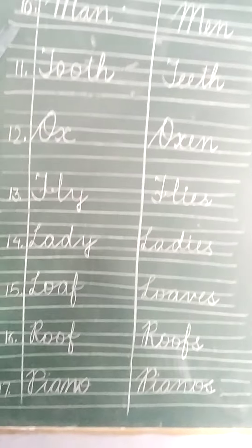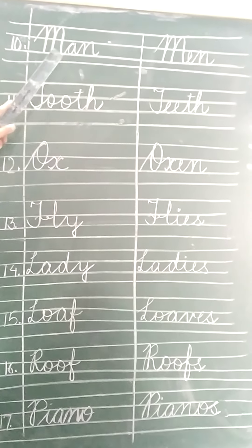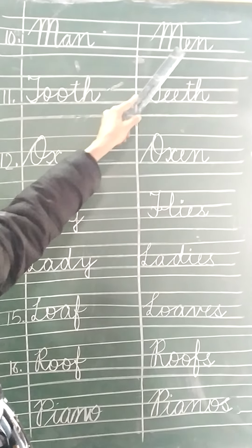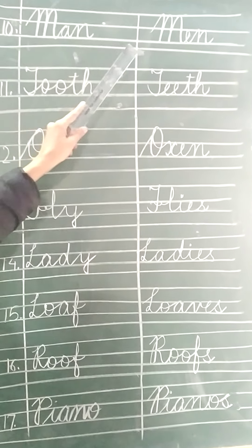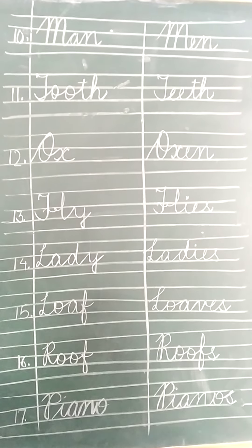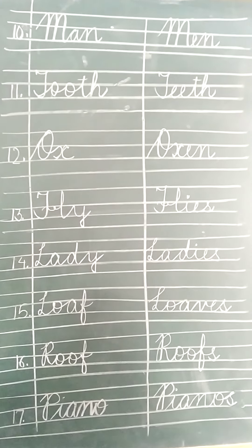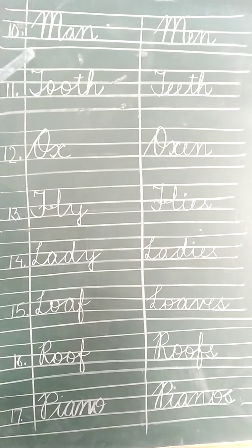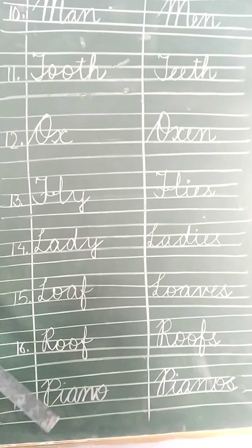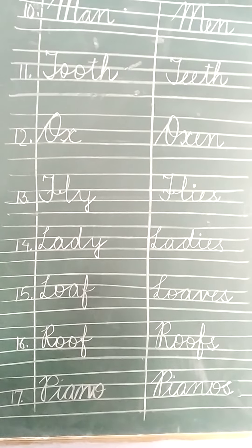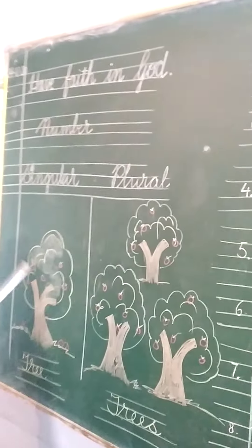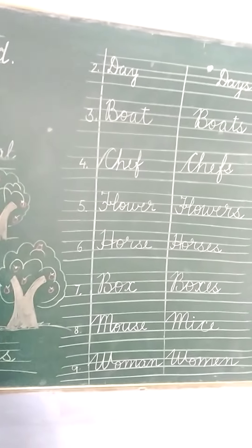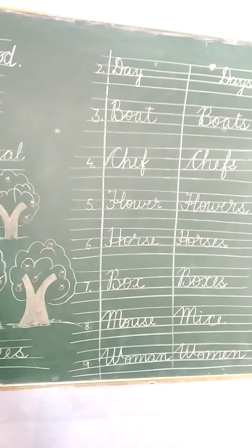The last word is man — M, A, N. Again, we replace A with E and it becomes plural: men — M, E, N. Students, there are 20 words you have to do for singular and plural. That's all for today. Tomorrow we will continue our work. Do this work in very neat and clean writing in your English copy. Draw the pictures very neatly and learn these words — singular and plural. Thank you, have a nice day.